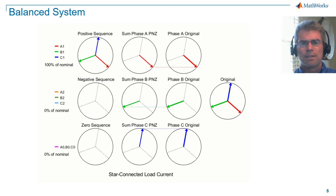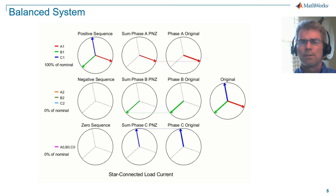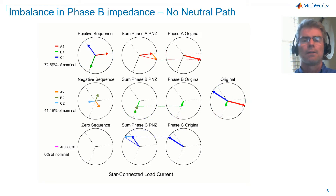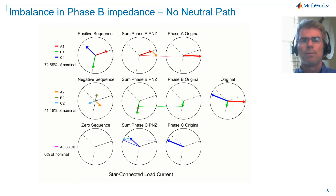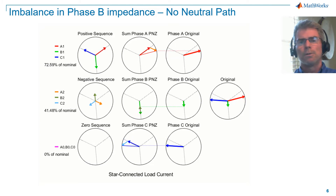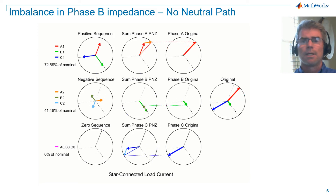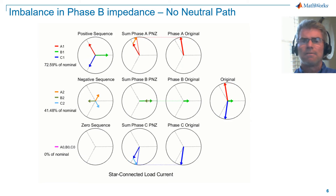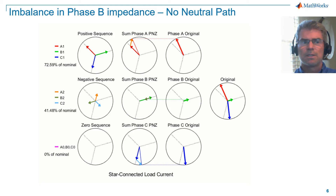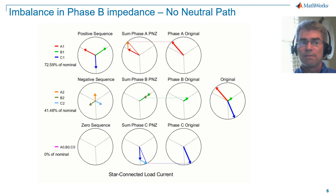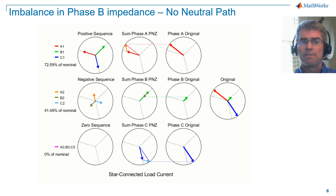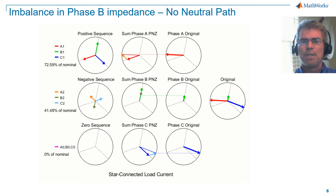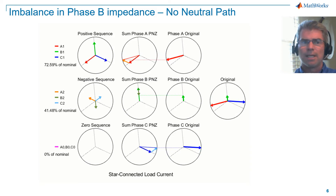Now let's take a look at an unbalanced system that has no neutral path. To imbalance the system, I'll increase the resistance in phase B of the system load. You can see in our left column that we now have a negative sequence. Also note that the positive sequence is reduced in magnitude. As this example has no ground or neutral path, we have no zero sequence current. Note that the phase ordering of the vectors in positive sequence is ABC — B lags phase A, and C lags phase B. In the negative sequence, the phase ordering of the vectors is ACB — C lags phase A, and B lags phase C.